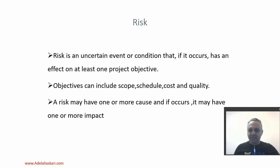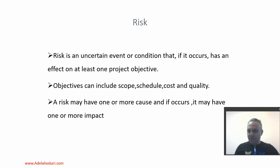Before going to the main body, let's define risk. My reference for this definition is the Project Management Body of Knowledge standard, issued by the U.S. Project Management Institute — a globally recognized standard for project management. In this standard, risk is defined as an uncertain event or condition that, if it occurs, has an effect on at least one project objective. The project objective can be its time, cost, scope and quality, or its benefit.